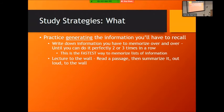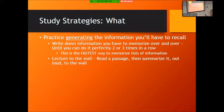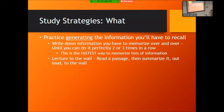You can practice generating information you'll need to recall. Take a blank piece of paper and, for example, write down as many elements from the periodic table as you can from memory. Or have information next to you with a blank sheet, and write down what you need to memorize until you can do it from memory two or three times in a row without mistakes. This takes a lot of time but for many people it's the fastest way to memorize lists of information. I don't recommend it for essay exams, but for memorizing lists it may be the best approach.